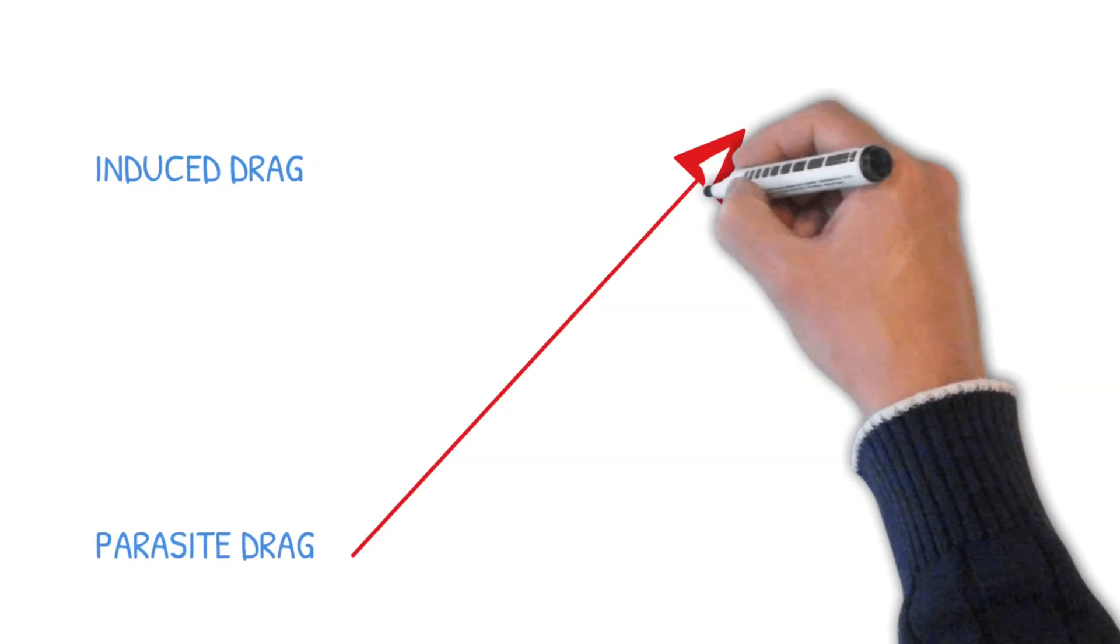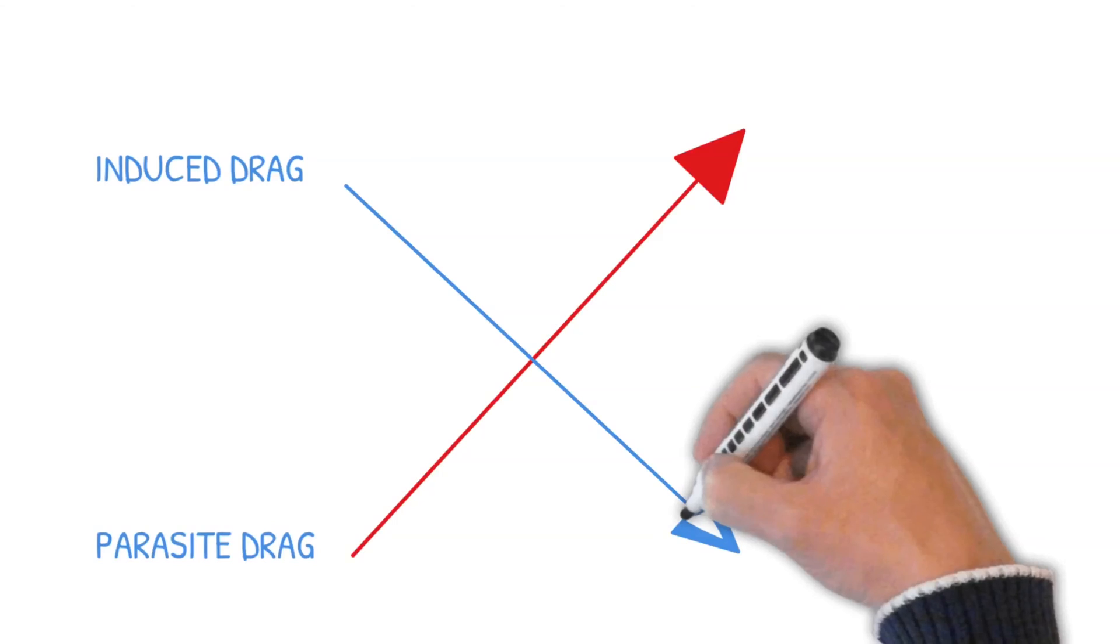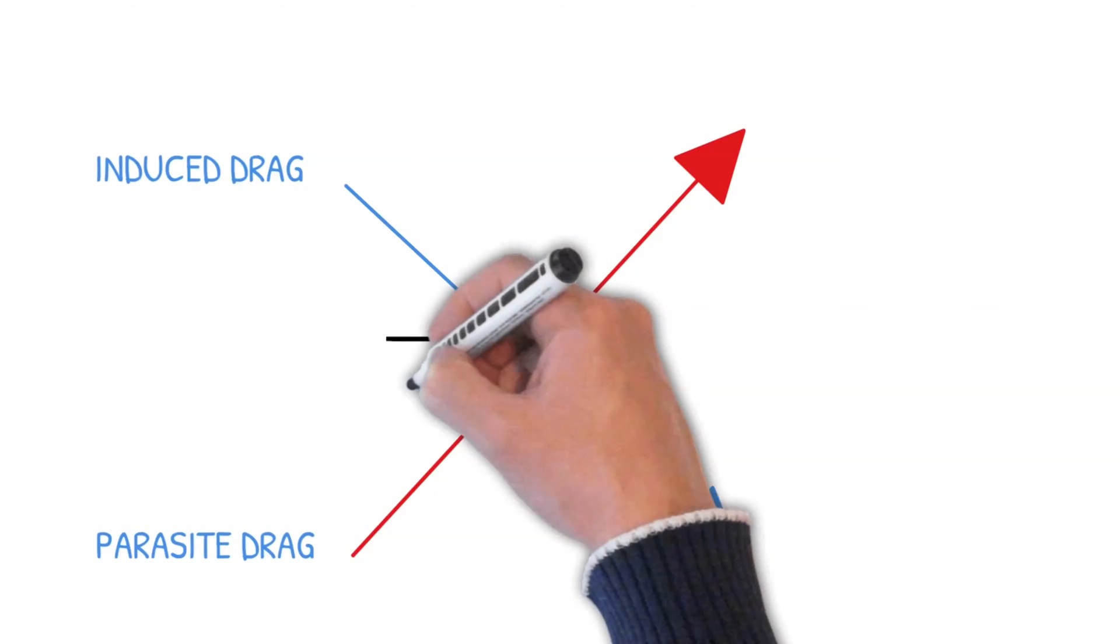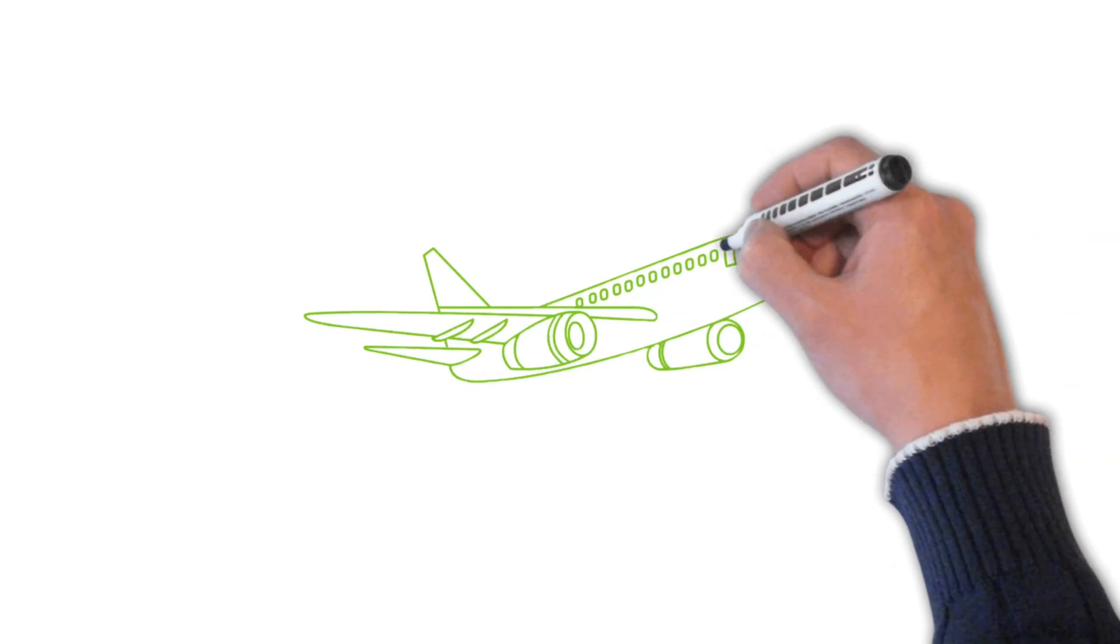Just like when you stick your hand out of the car window, parasite drag increases as speed increases and induced drag decreases. That means there's an optimum speed where an aircraft can achieve the least amount of drag possible. This is often referred to as a lift to drag ratio.